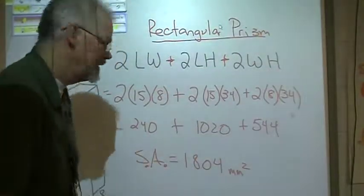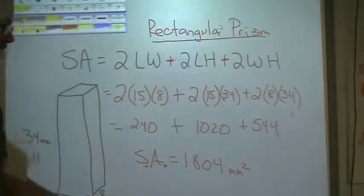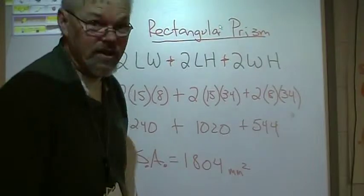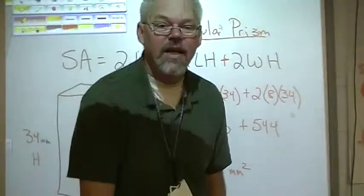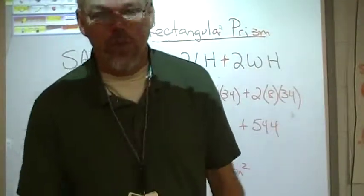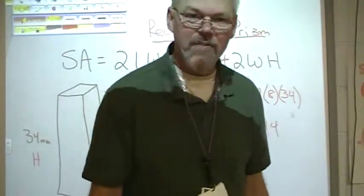Perimeter is not, perimeter is just a measurement around like you're building a fence. Area is always squared, and then we're going to learn about volume here really soon, and that's always cubed.